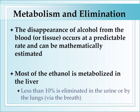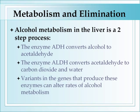Alcohol metabolism primarily occurs in the liver. It's a fairly simple enzymatic pathway that occurs at a predictable rate and so can be mathematically estimated. There is a small amount of alcohol metabolism that occurs in the kidneys with subsequent elimination in the urine, and some alcohol is expired through the lungs, which facilitates the use of breathalyzers. But the vast majority of metabolism occurs in the liver. It's a two-step enzymatic pathway.